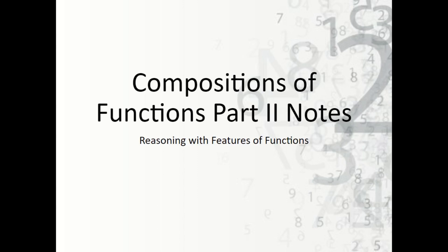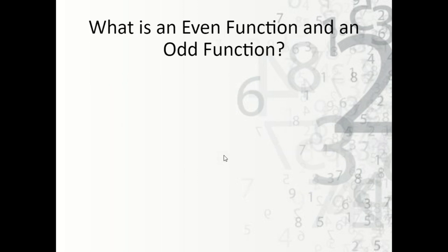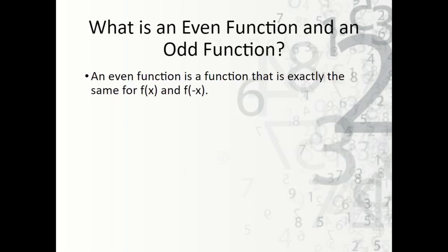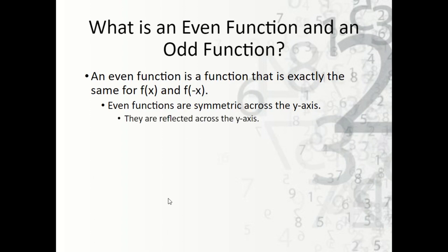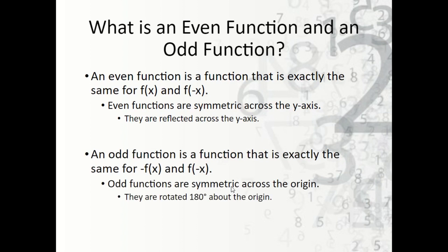Let's take a look at the Compositions of Functions Part 2 notes. First, what is an even function and an odd function? An even function is one where f(x) equals f(negative x), meaning even functions are symmetric across the y-axis. An odd function satisfies negative f(x) equals f(negative x), meaning it is symmetric across the origin — rotated 180 degrees about the origin.